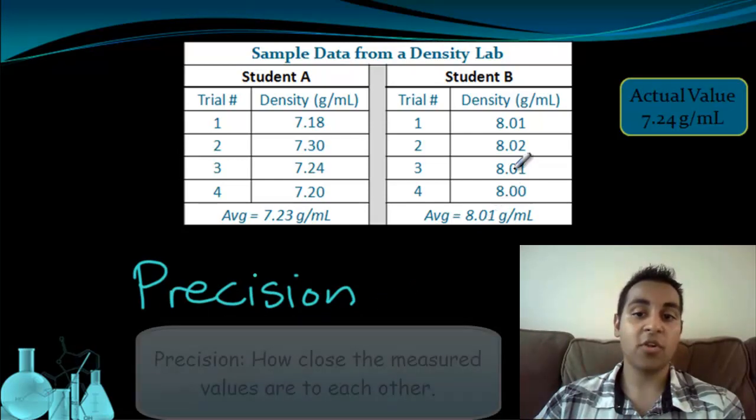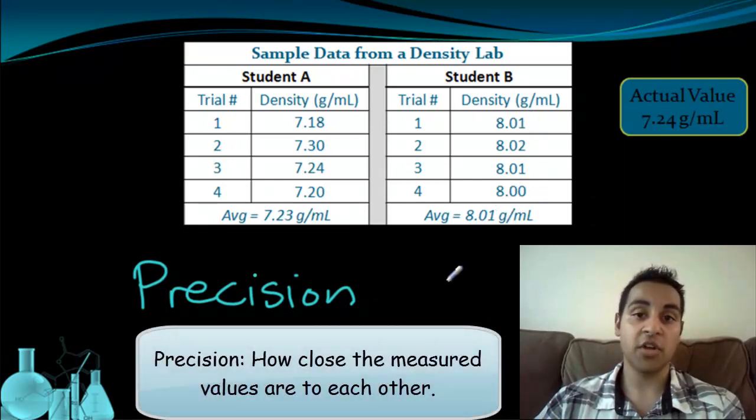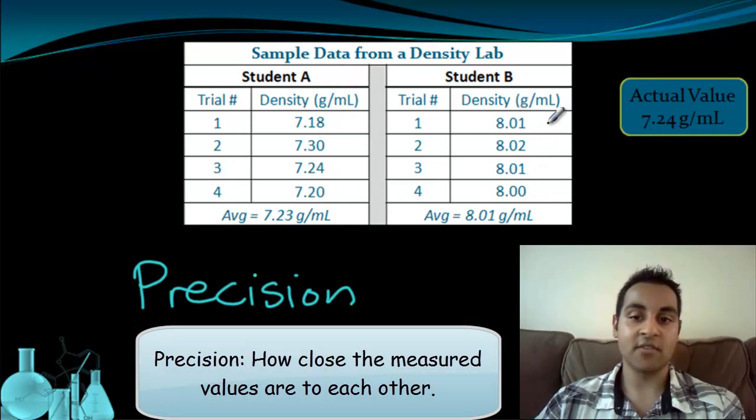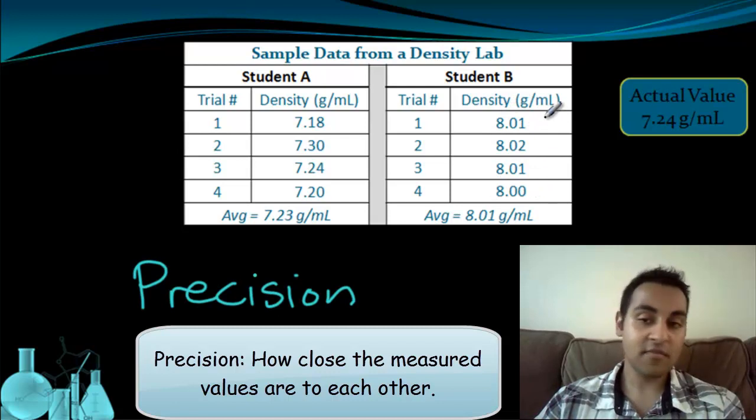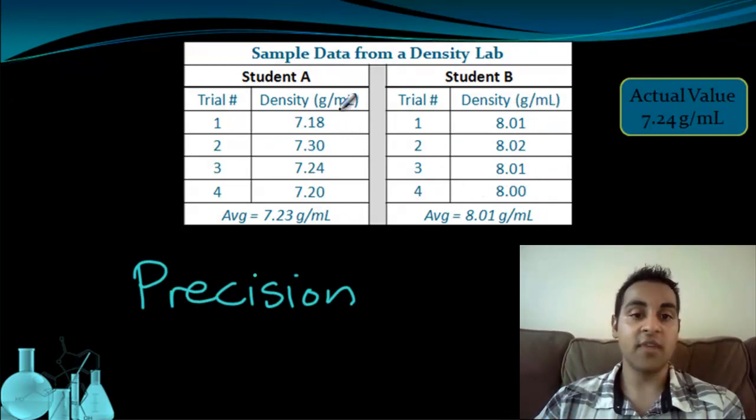Precision refers to how close the measured values are to each other. So in this case, we're using density as our measured value. Student B's measurements are much closer to each other than student A's. Student A has more of a scatter of data that averages out pretty well, but student B's data is very precise. All the data points are very close to each other: 8.01, 8.02, 8.01, and 8.00. So student B may not have been very accurate with their results, but the results are much more precise than student A's.